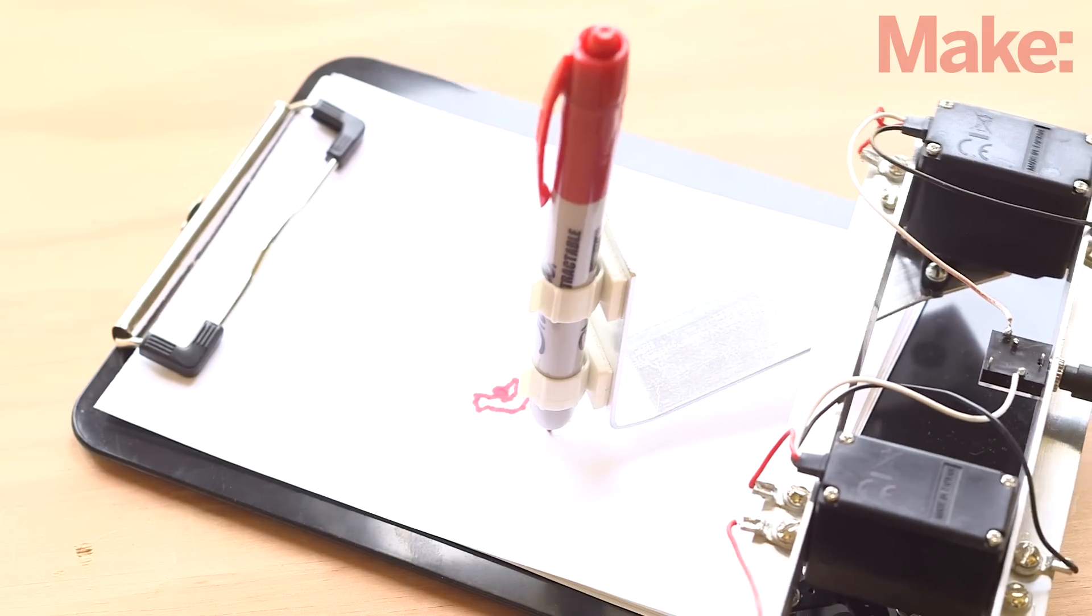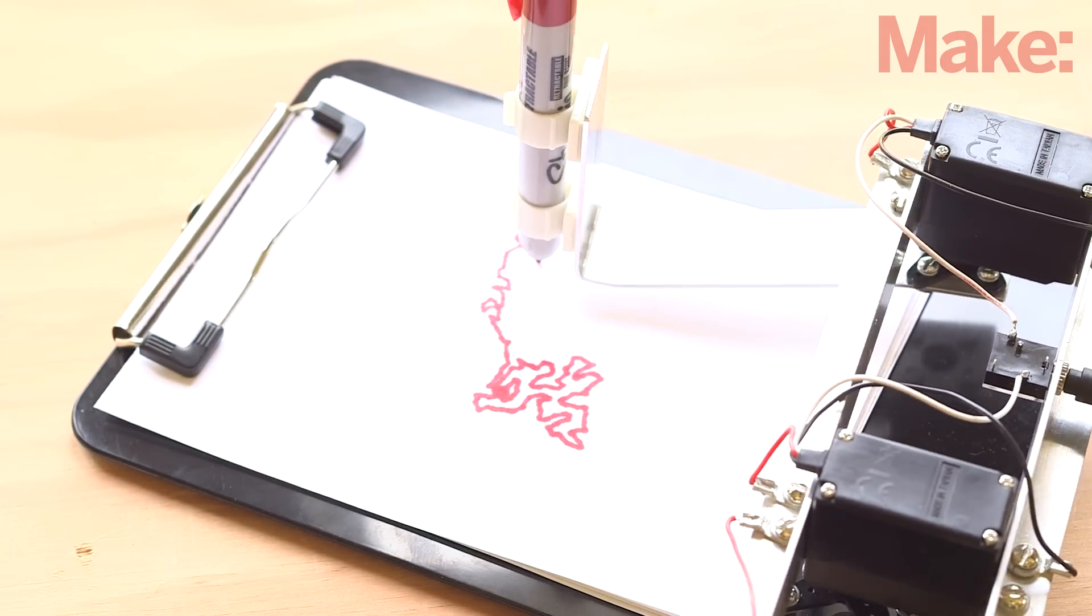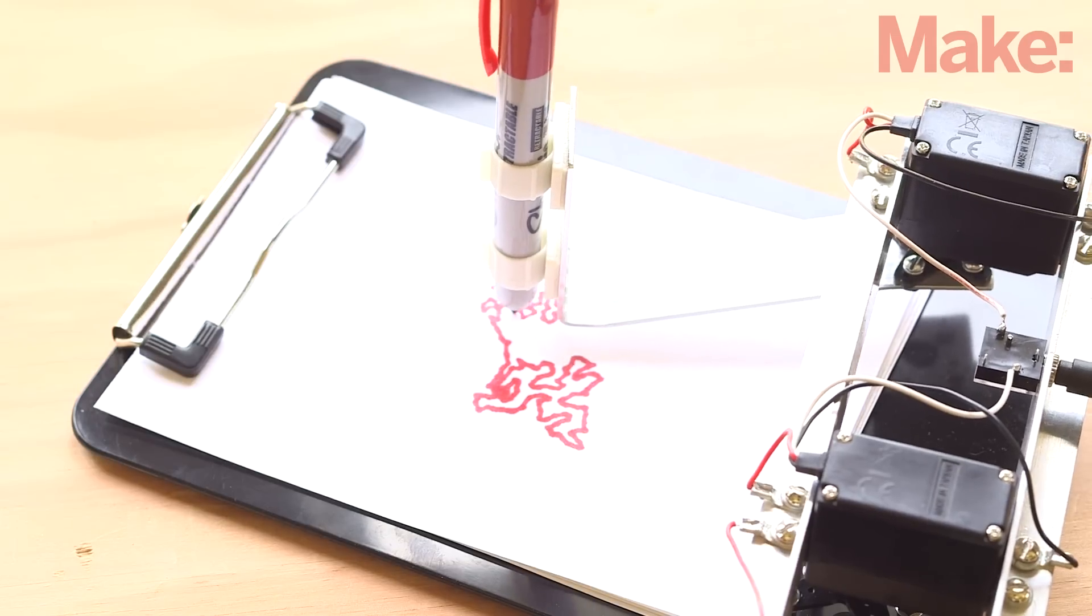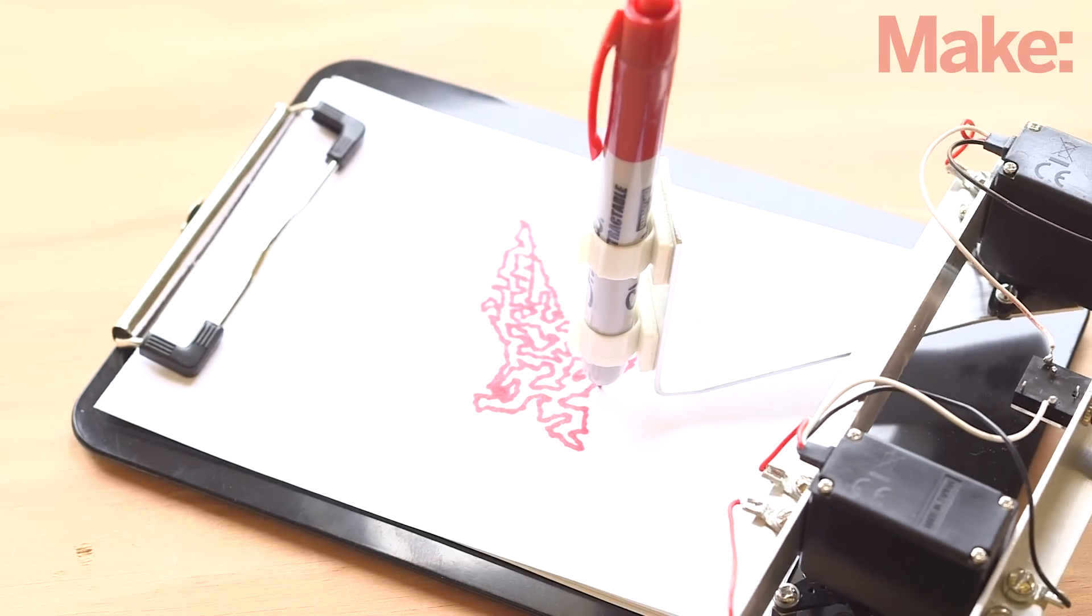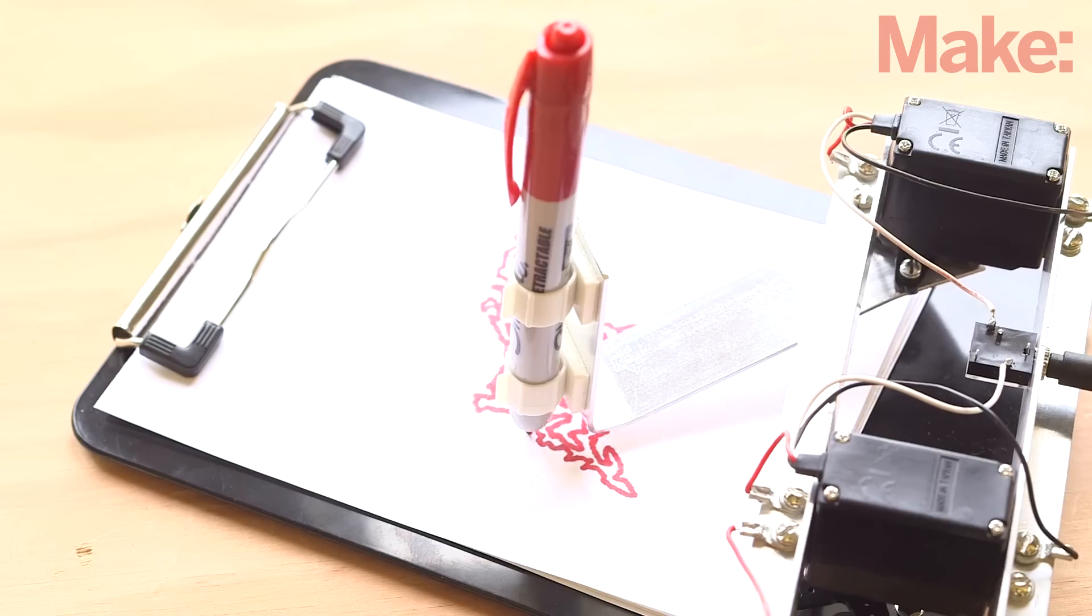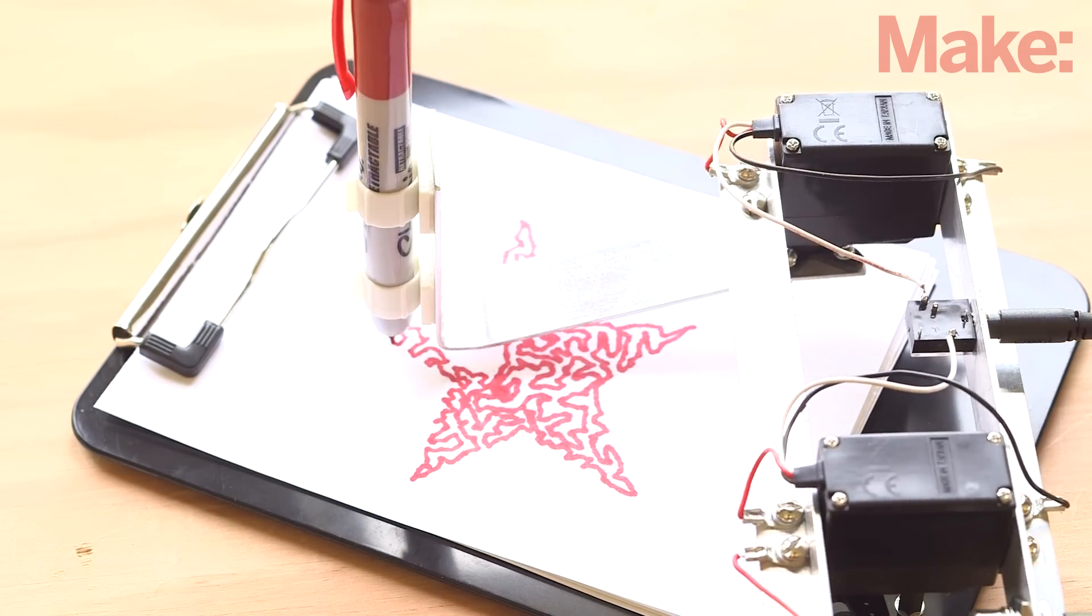Now that your bot is calibrated, head on over to the project page where you can download sample drawings or learn about how easy it is to convert your favorite photos or artwork into an audio file that your drawbot can use. If you build a TRS drawbot or a project closely based on it, or if you just have ideas, insights, or comments to share, we want to hear from you. Be sure to leave a comment on the project page. Have fun!